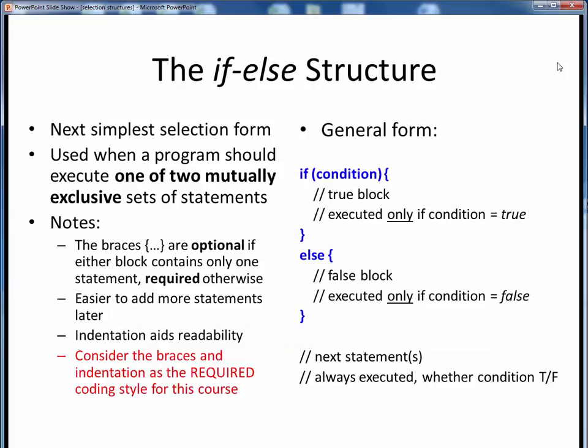The next step up in selection logic is the if-else structure, which should be used whenever our programs need to execute only one of two mutually exclusive sets of statements. Here on the right, we see the general form. As before, we have the if keyword, followed by some condition within parentheses, followed by the true block of statements within curly braces, which are executed only if this condition evaluates to logical true.